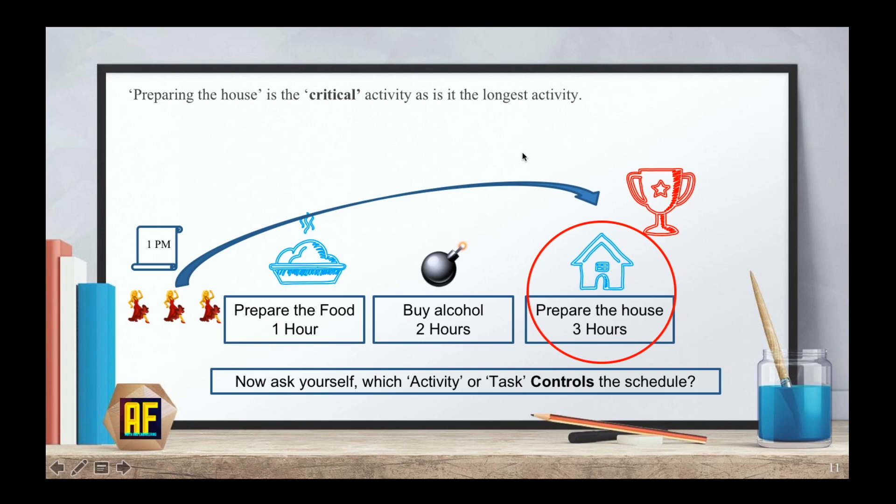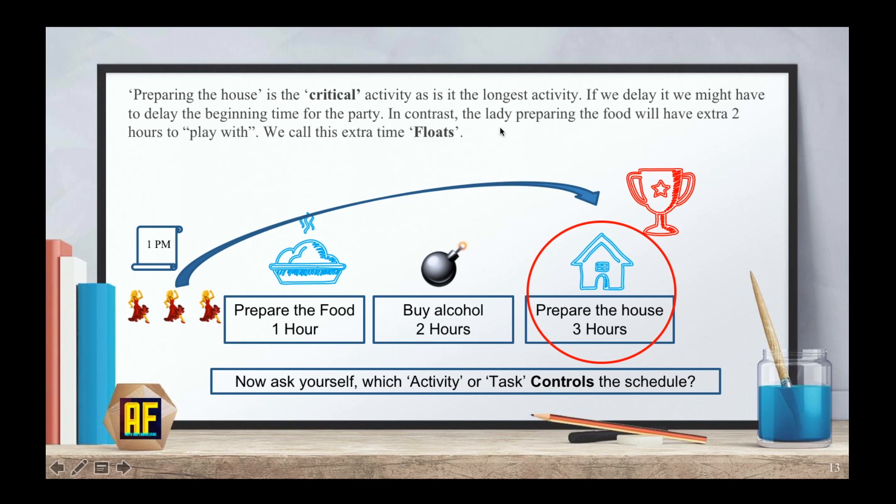Which is the most critical from those 3 activities? And the answer is this one. The person preparing the house needs to start at 1 and finish at 4. And if she will start at 2, it means that the party can only start at 5. While the person preparing the food, they can start at 2 or even 3 and still finish at 4 o'clock. That's why this task controls the schedule. Preparing the house is the critical activity, as it is the longest activity. If we delay it, we might have to delay the beginning time of the party. In contrast, the lady preparing the food will have an extra 2 hours to play with. We call this extra time floats. In this time, she can choose to start early, start late, finish early, or finish late, as long as she does not go over the time agreed to start the party.